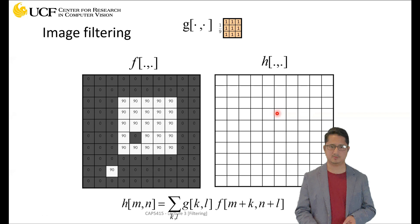This is a more concrete example. Let's say this is an image patch, so all the dark pixels are zero and we have some bright pixels which have a value of 90.